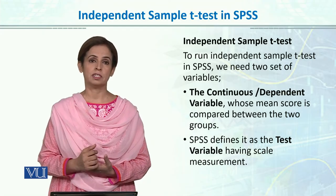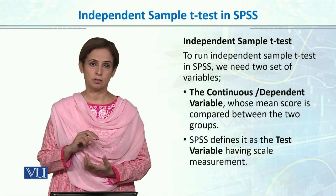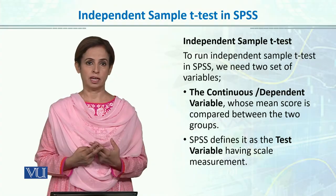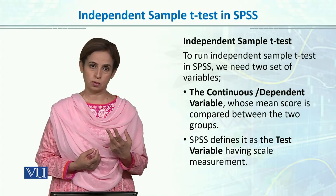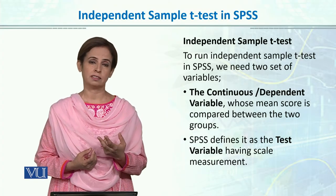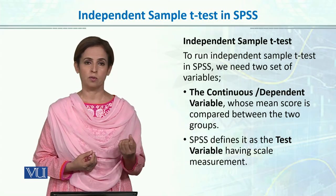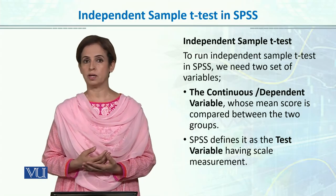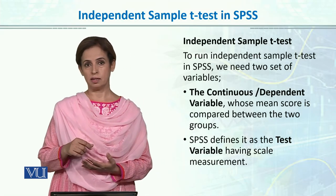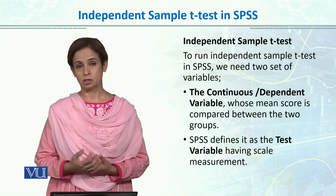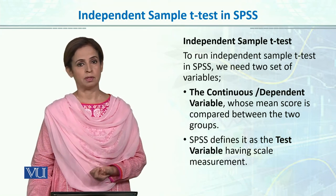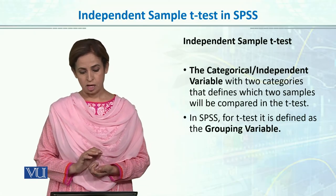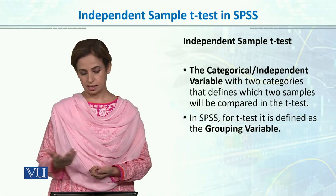The independent variable in the t-test is always categorical. Categorical means the t-test allows us to test differences between two groups. If we move to ANOVA and the F-test, our independent variable would still always be categorical. In the t-test, there will be two groups — what we call the grouping variable in SPSS — and we assess those two categories.